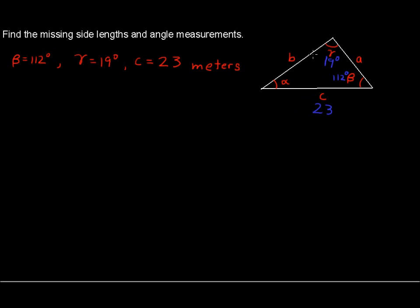Alright, the sum of all of the angles in a triangle are 180 degrees, so let's go right away and find alpha. Alpha is 180 degrees, that total minus the 112 taken up by beta, minus the 19 taken up by gamma, so right away we have that alpha is 49 degrees.